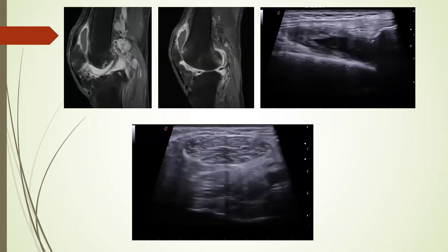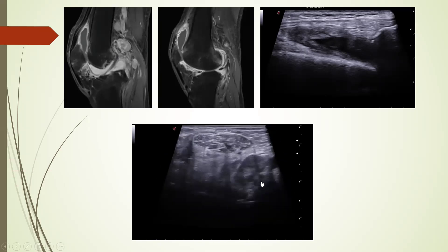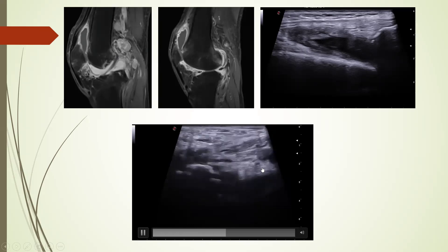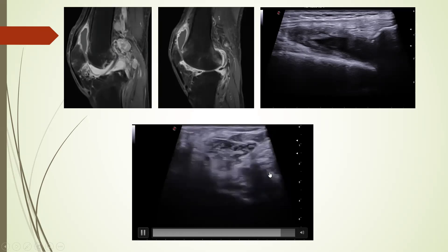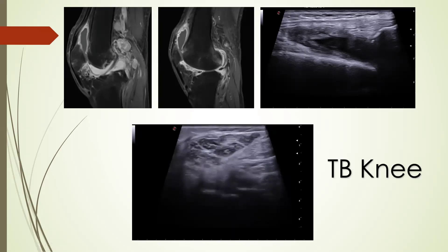In this case we can see synovial thickening, effusion, and enhancement, plus lymph nodes in the popliteal region. This still ultrasound image shows surrounding synovial thickening with effusion, and in this popliteal region ultrasound video we can see enlarged lymph nodes. This was a case of infective arthritis of the knee joint, particularly tuberculosis.